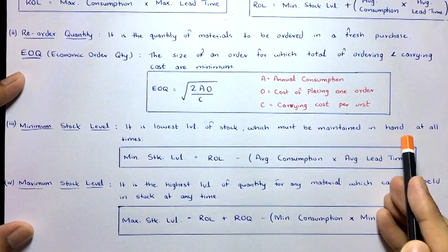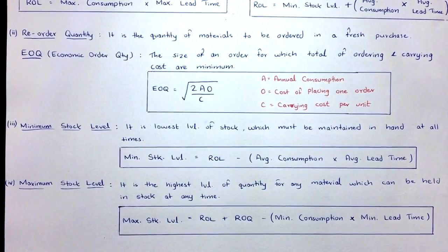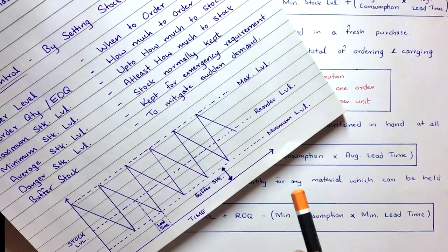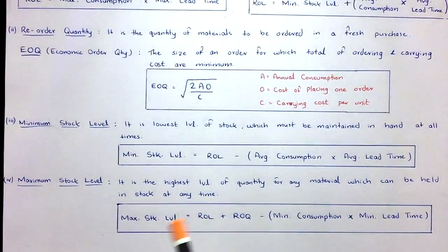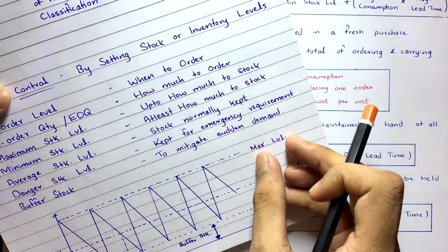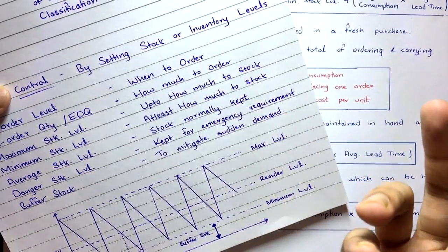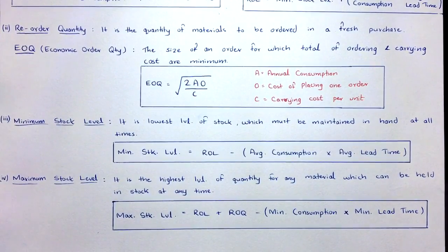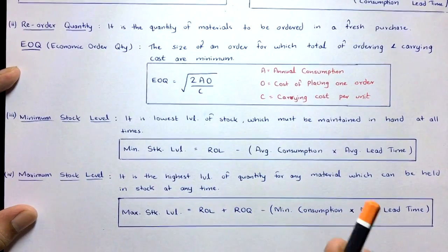Minimum stock level is the lowest level of stock that must be maintained at all times — we do not let inventory fall below it. Maximum stock level is the highest level of stock — we do not let inventory go above it, as doing so causes wastage and unnecessary cost. The formulas for both are almost the same.